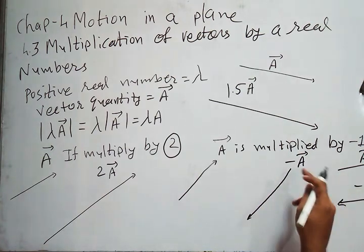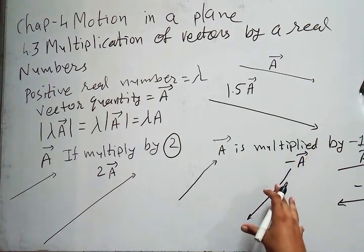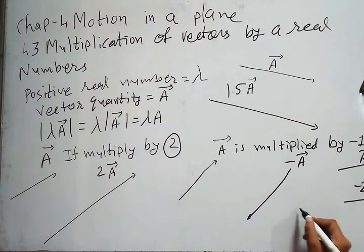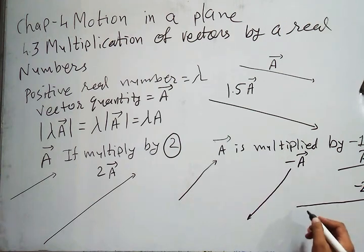Suppose I multiply by minus 2. So what will happen? Then the length will be double. But according to the minus sign, it will be in the opposite direction.